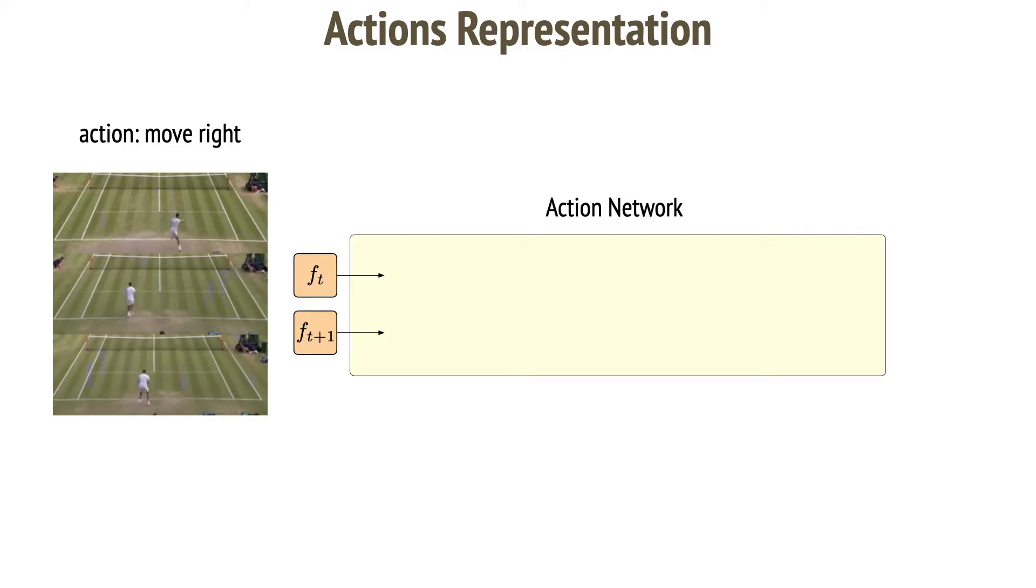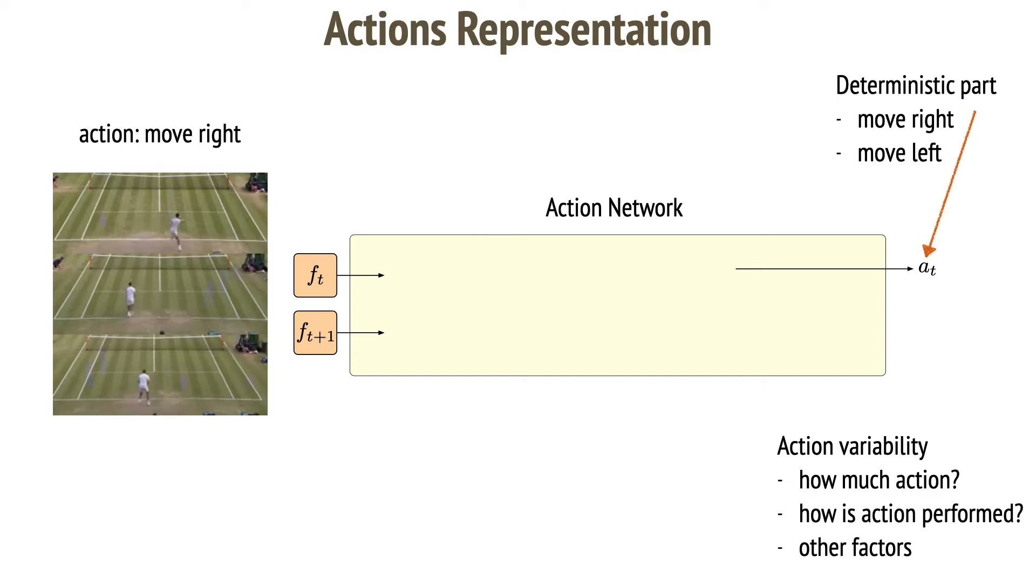Actions consist of deterministic part, AT, describing which action should be used. Discrete action label does not account for how much action is performed, action speed, and other factors. To address this, we add action variability. Recall that our model is unsupervised and we don't supervise any of these action parts. So how to learn them?